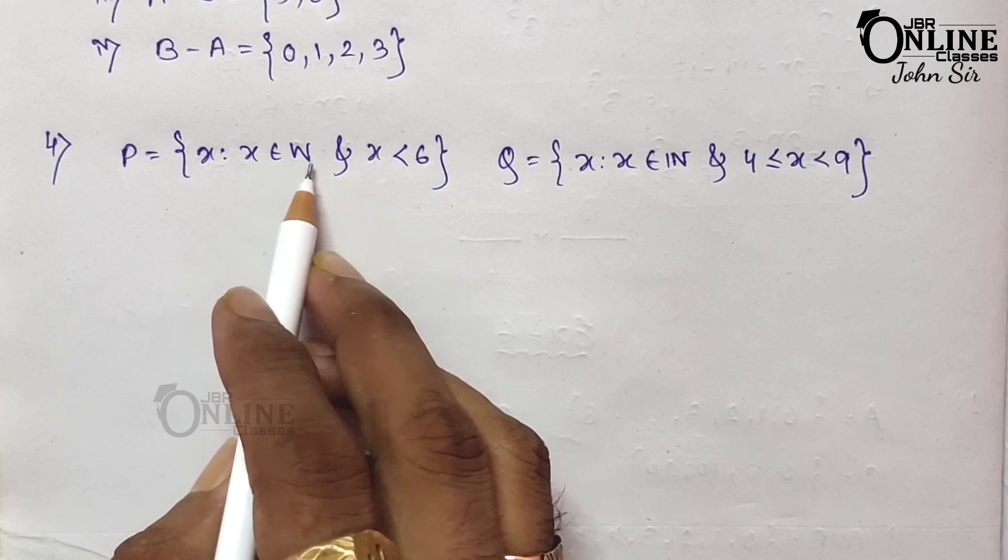A union B: 12, 15, 18, 20, 24, 25, 30, 35, and 36. A intersection B: the only common element is 30. To verify: N(A union B) = 9. N(A) = 5, N(B) = 5, N(A intersection B) = 1. So 5 + 5 − 1 = 9. Left hand side equals right hand side — it's verified.